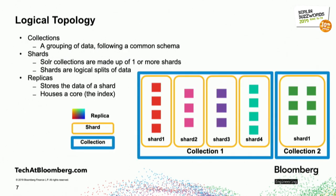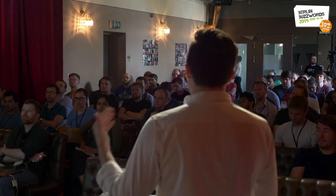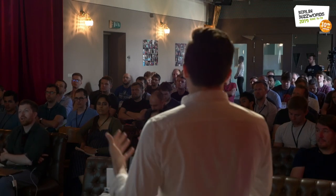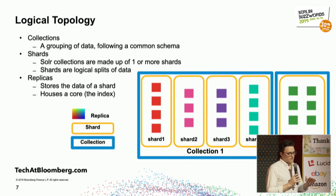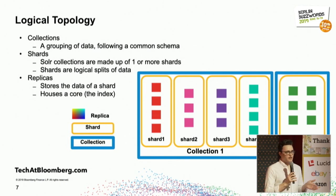Next you have the logical topology — the other side of how you manage the data. Data is broken down into collections, which is just a logical grouping of documents with the same schema that you can do common operations on. These are further broken down by shards, which are logical splits of the data for replication — Solr shards can only store up to 2 billion documents. Replicas are copies of a shard's data, replicated as many times as you want to add resiliency to your Solr cloud.